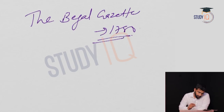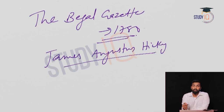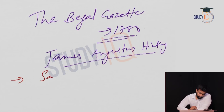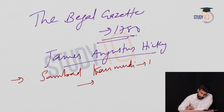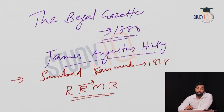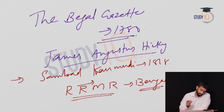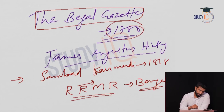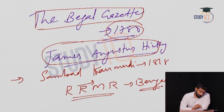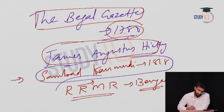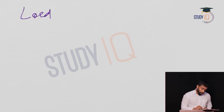The first newspaper published in India was the Bengal Gazette in 1780 — the owner and editor was James Augustus Hicky. The first Indian language newspaper was Sambad Kaumudi in 1818, edited by Raja Ram Mohan Roy, published in Bengali. After Charles Metcalf comes Lord Auckland, after whom Auckland city in New Zealand is named.